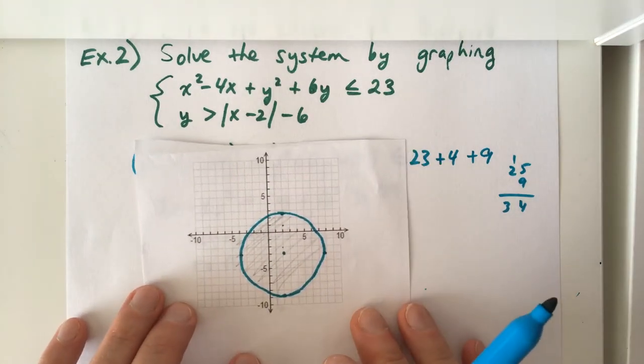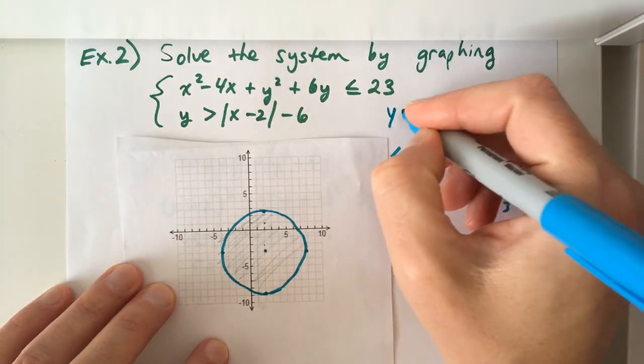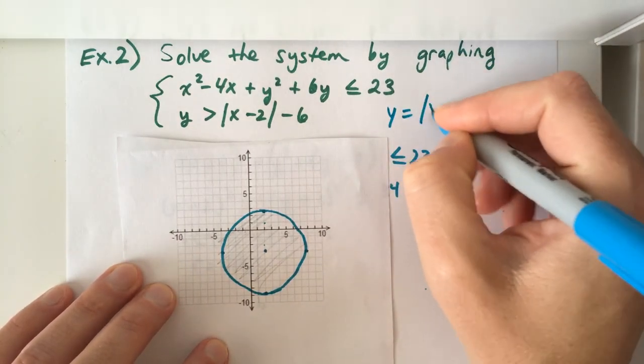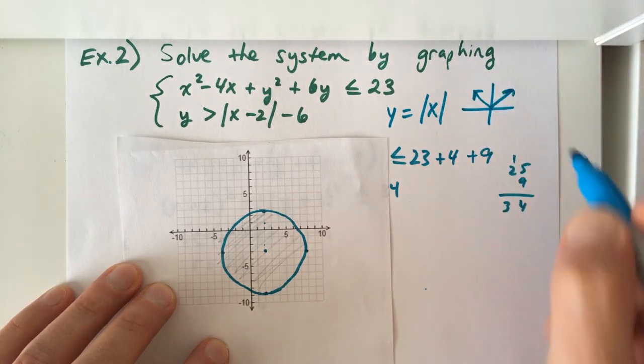To graph the second equation, we can think about plotting points. Or we can remember the equation y equals absolute value of x is a v-shape that starts at the origin.